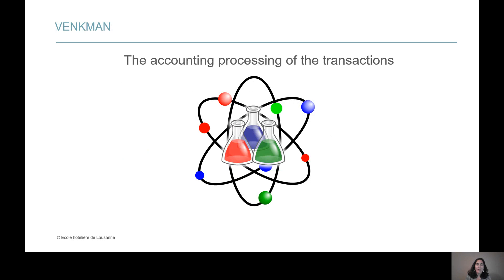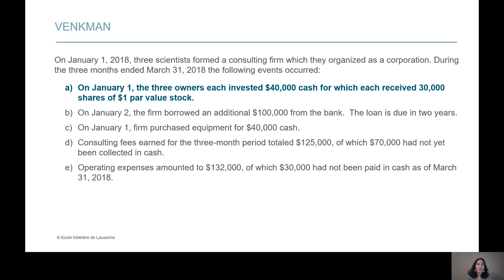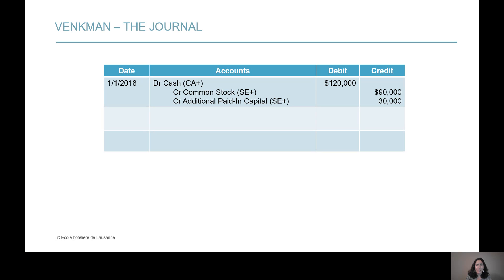Now let's look at the first transaction of Venkman. The three owners each invested $40,000, for which each received 30,000 shares of $1 par value. The company collected 3 times $40,000 equals $120,000, recorded in the cash account. Then, 3 times 30,000 shares times the $1 par equals $90,000, which goes into the common stock account. The difference of $30,000 goes into APIC.